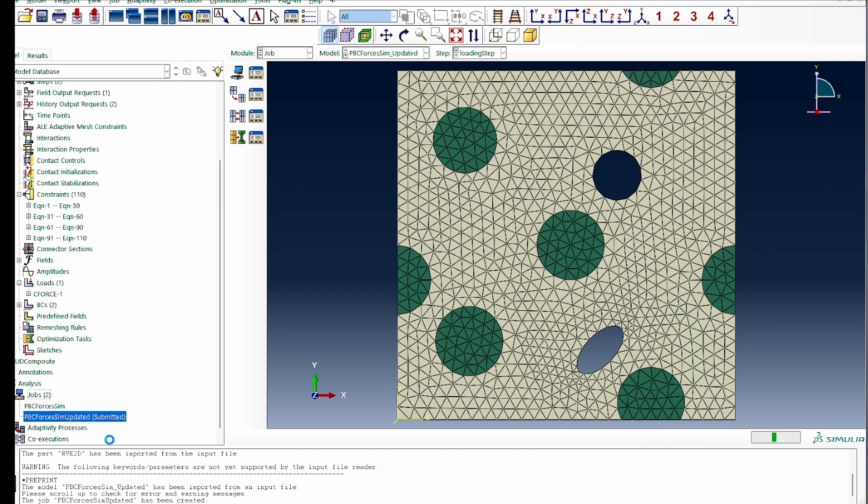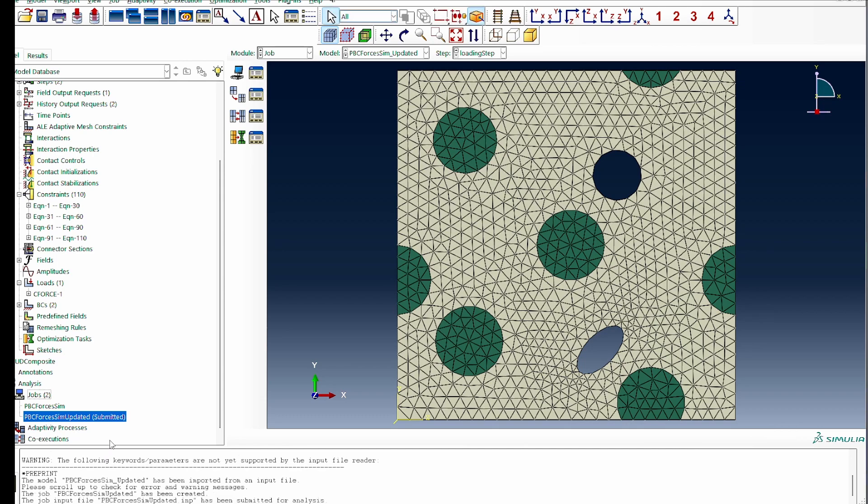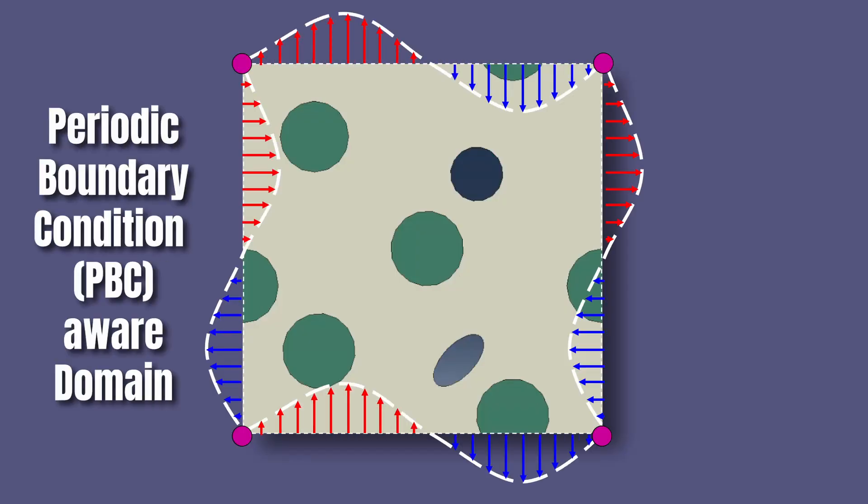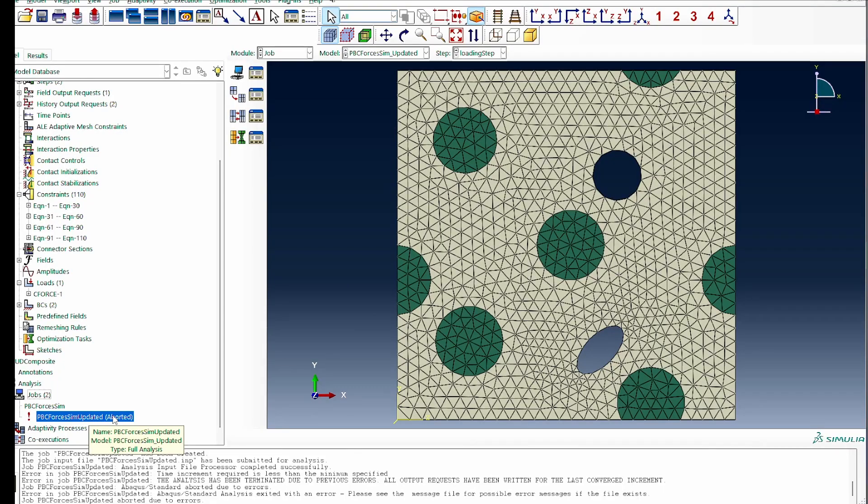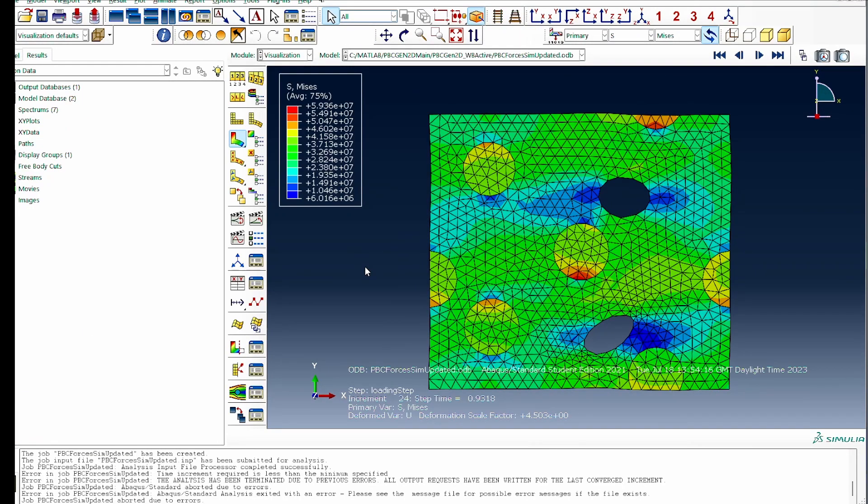If you're interested in learning how the theory of periodic boundary condition works, look at the cards here with videos I've made talking about exactly how the theory works. The final thing we need to do is create a new job based on this updated file. We'll call it PBC updated. Once we have that, we can submit it to run.